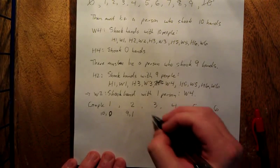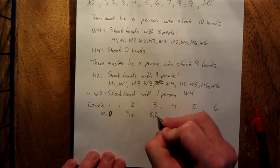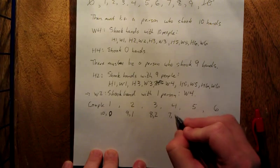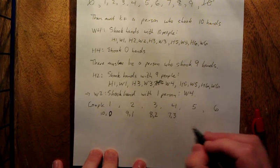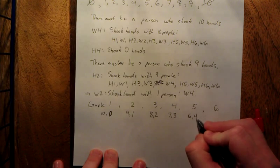What we're going to see if we continue this pattern is that in couple three, one shakes hands with eight, the other with two. In couple four, one will shake hands with seven people, the other with three. And in couple number five, one will shake hands with six people, the other with four.